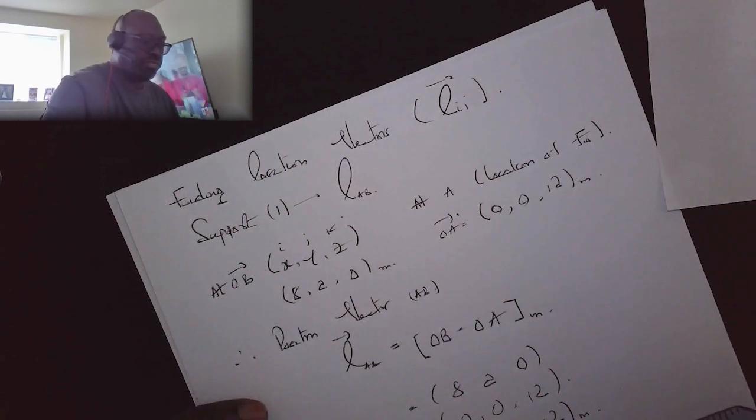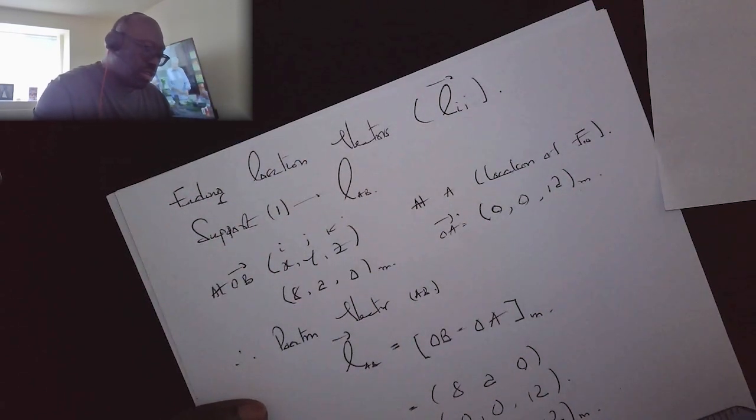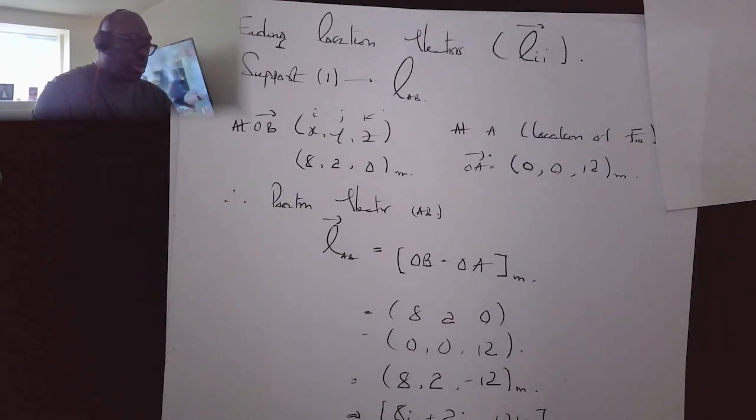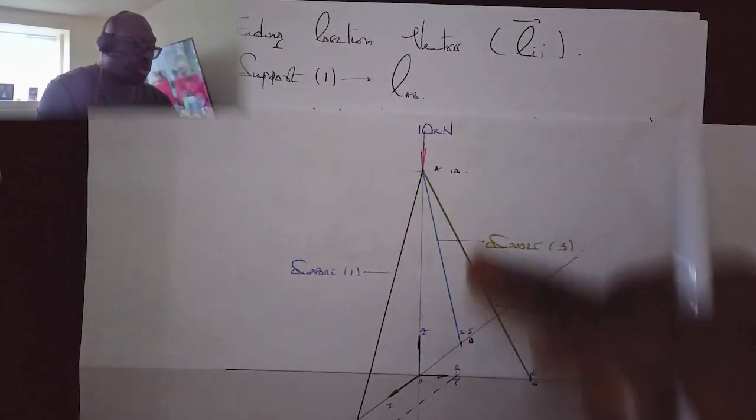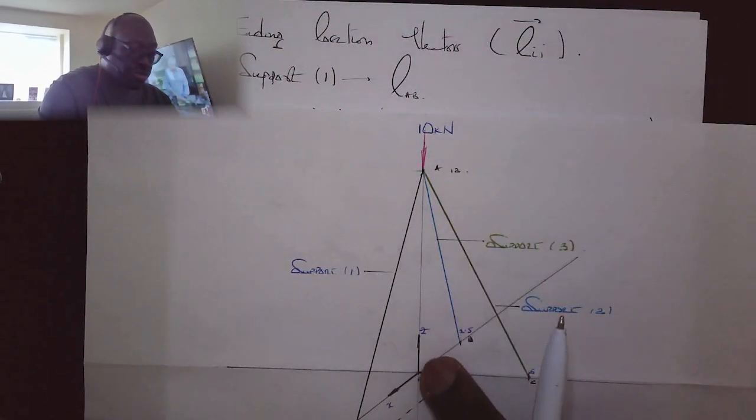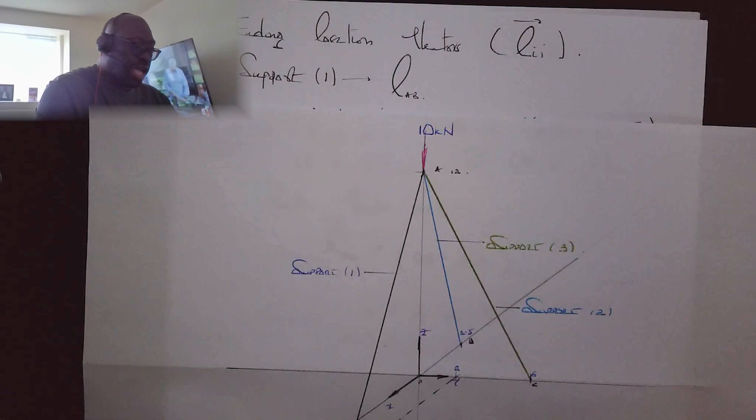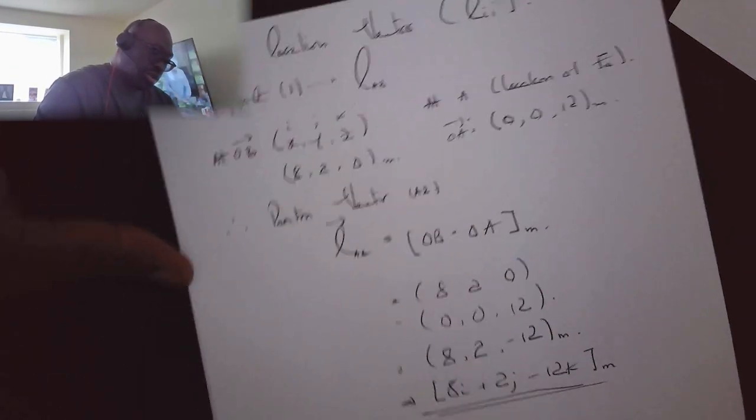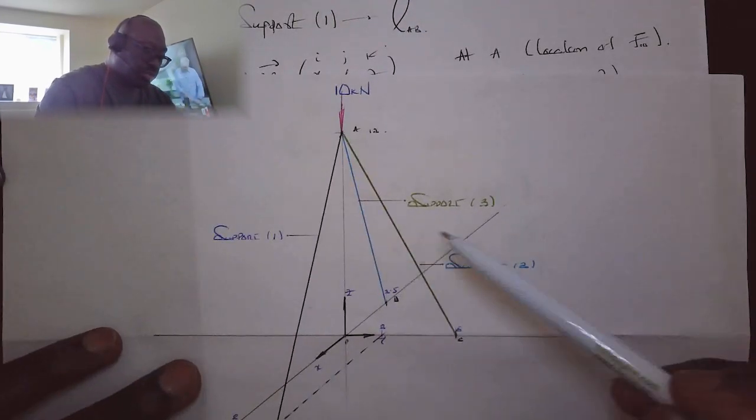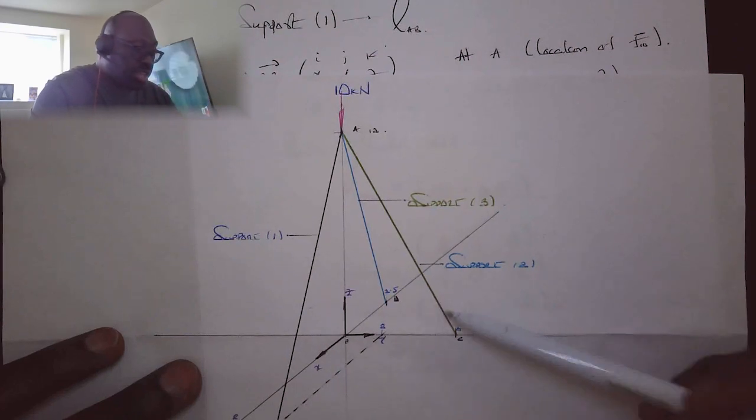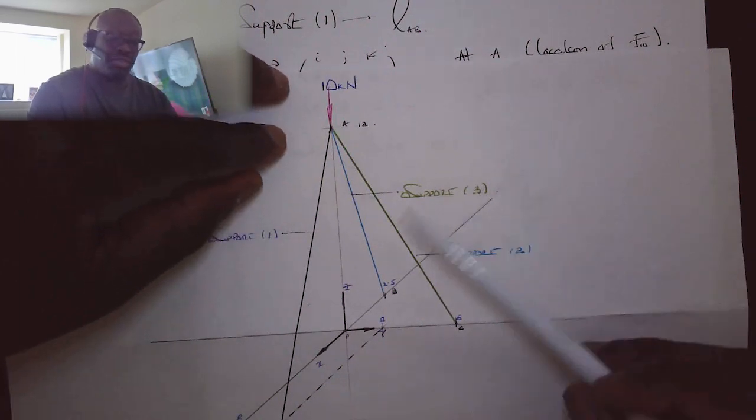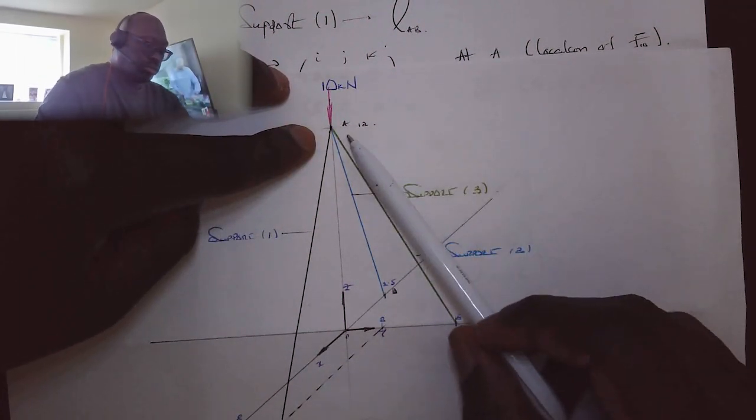So let's look at the next vector, which would be for support C. Similar to what we did previously, I'm going to work out or deduce the position of A, which we've already done to be zero, zero, twelve, with respect to our reference plane, our reference coordinate. And then C is going to be, so in terms of X, it lies on Y, so X would be equal to zero. Y is at five. And in terms of Z, there's no rise at C, so that is zero.